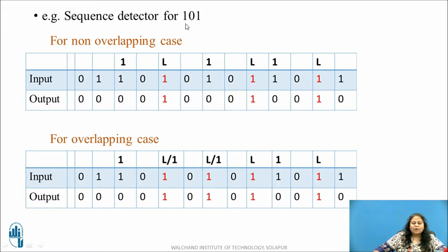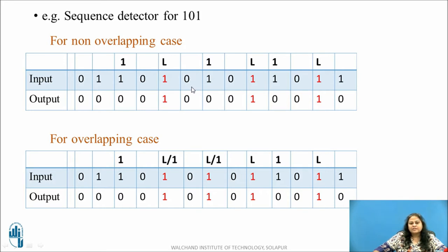Let us assume that this is the input bit stream that is available. As per the sequence, once the complete sequence 1, 0, 1 is received the output bit becomes 1. So let us try to trace the input. This is a 0 bit, so it is not a start of a sequence. This is 1, it can possibly be the start of the sequence, but the next bit immediately is 1, so here the sequence got broken. Again this 1 is assumed to be the start of the bit and the sequence is traced: 1, 0, 1. Here the sequence received is complete, so this is the last bit of the sequence hence the output is made 1. Next, the bit received is 0, so this is not the start of the bit.